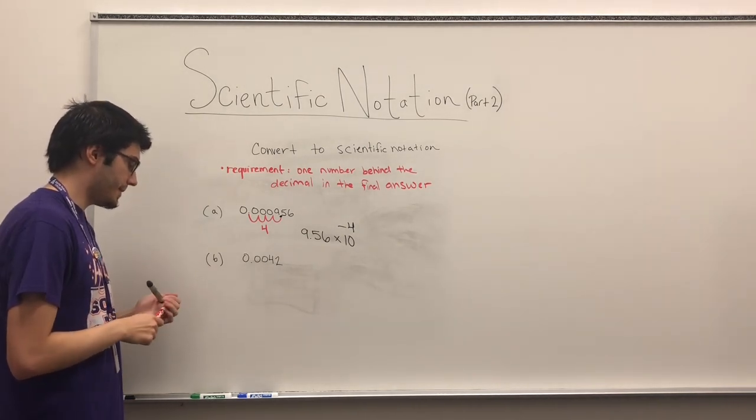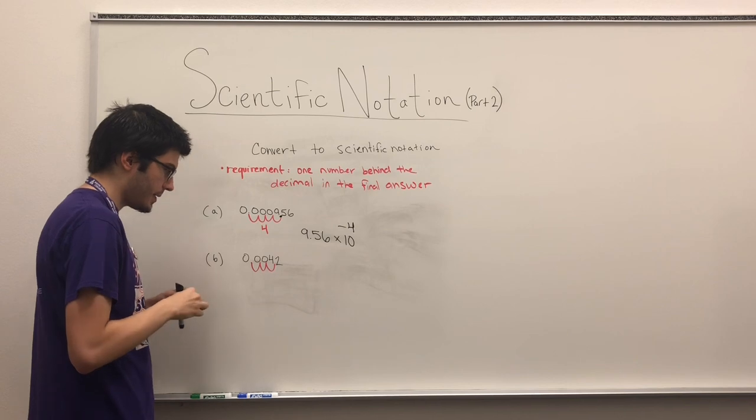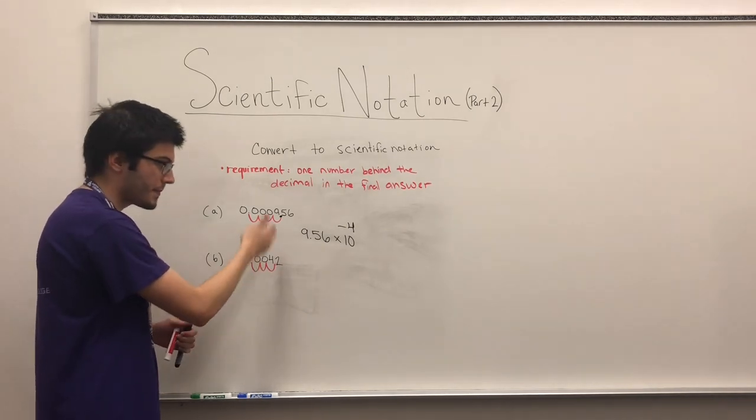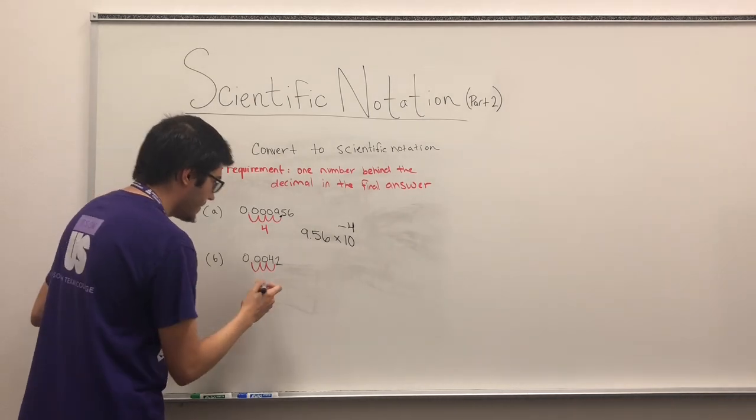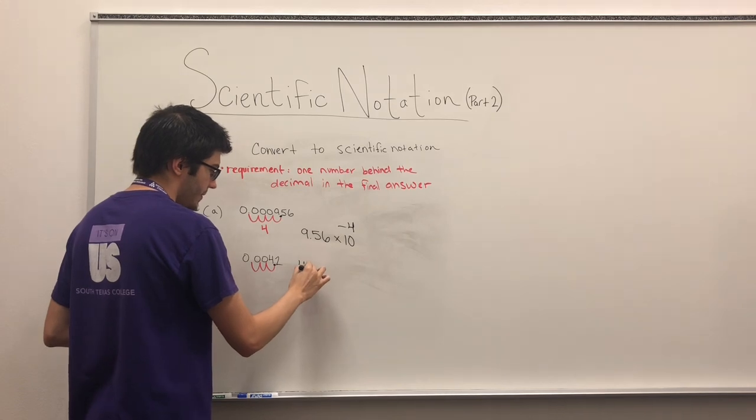And so the same thing with the next one. One, two, three. Four is the first non-zero number. I stop right there. So I'm going to move the decimal there. It's going to be 4.2.